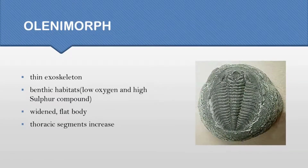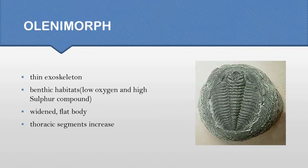For trilobites present in low-oxygen environments or high sulfur concentration environments, they let some sulfur-consuming bacteria live inside themselves, creating a symbiotic relationship. In some species, this caused an increased number of thoracic segments.